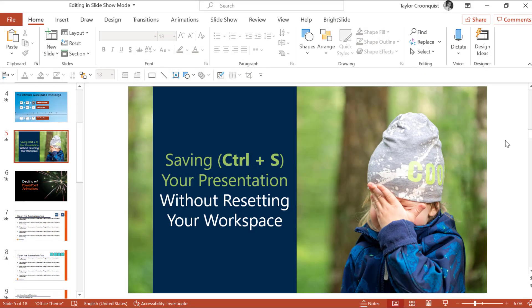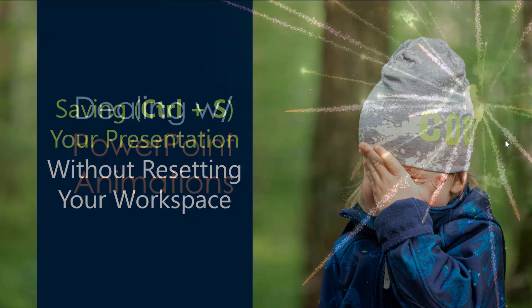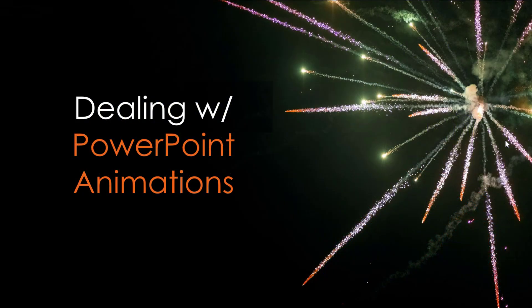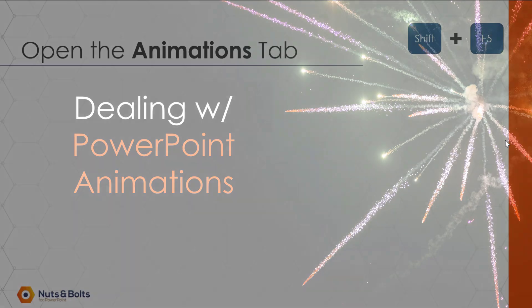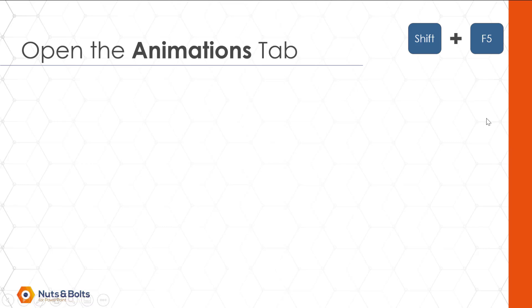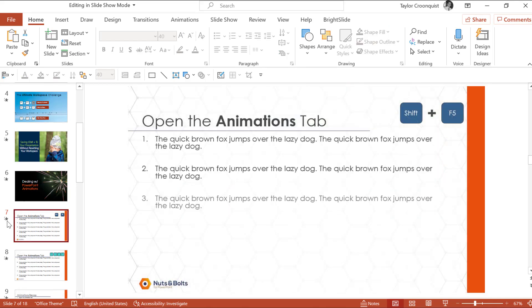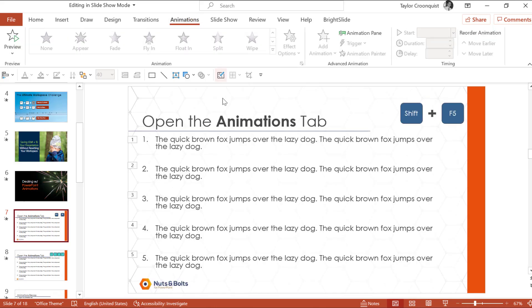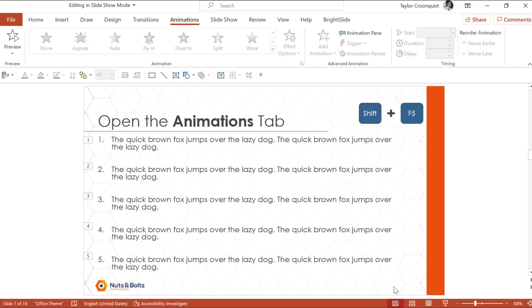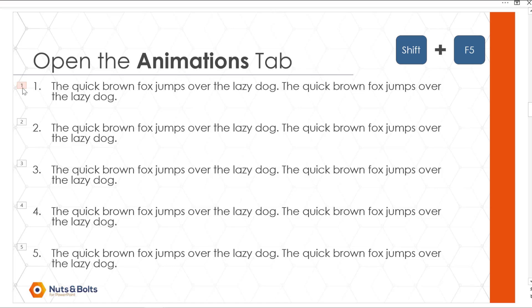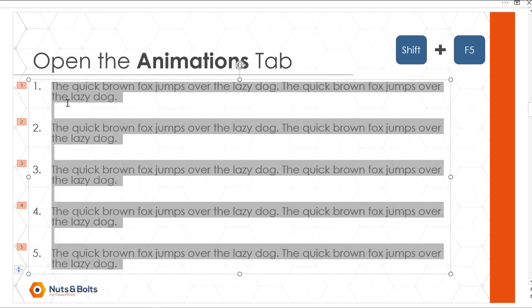Let's talk about how you deal with PowerPoint animations when using this view. When you're doing this ultimate workspace challenge, the first key is to open up the animations tab so you can actually see all of the animations you're working with. Normally you can view animations by clicking the little star on the left, but opening the animations tab shows all of them — which gives you a clue where animations are in your presentation. Because you're in the normal view, none of your animations will fire as you advance through the deck.